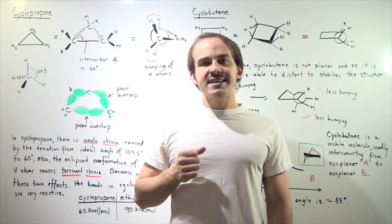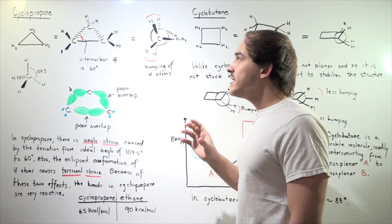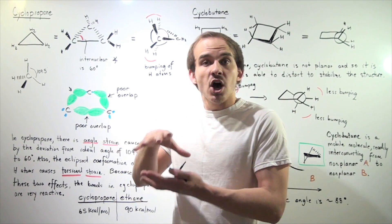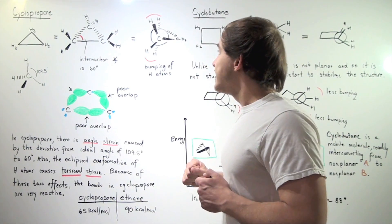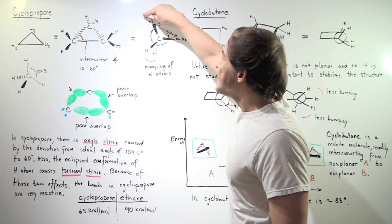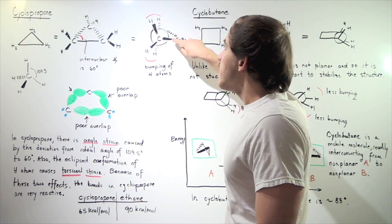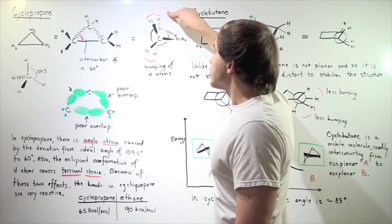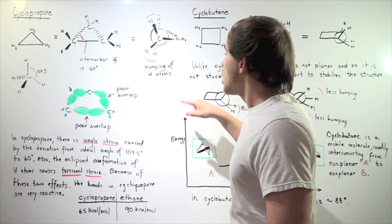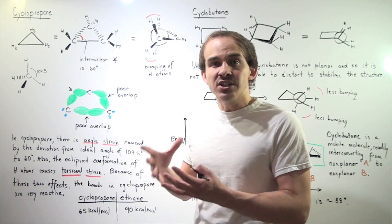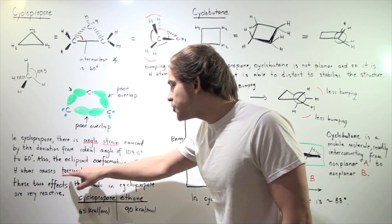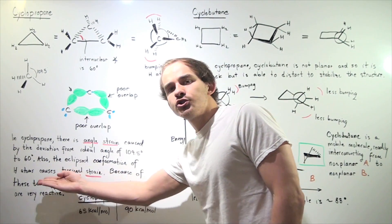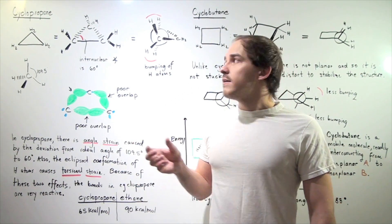There's a second destabilizing effect in cyclopropane caused by the fact that it is a static planar molecule. Because it has so few carbons, it always exists in an eclipsed conformation. The eclipsed conformation is higher in energy due to the bumping of the H atoms, creating steric hindrance — also known as torsional strain. This eclipsed conformation increases the overall energy of cyclopropane.